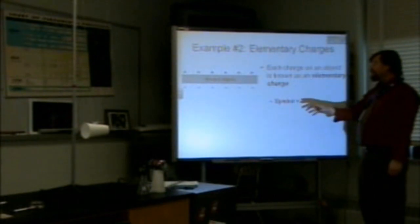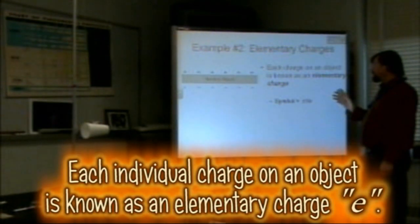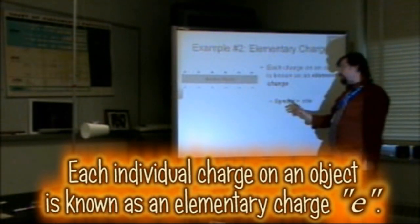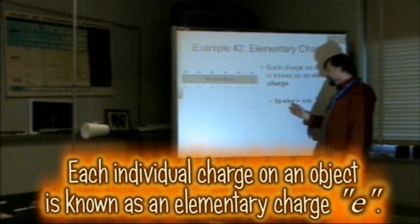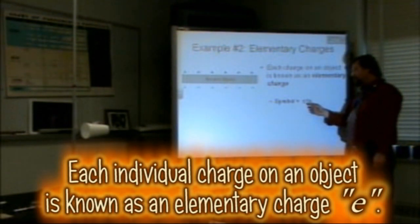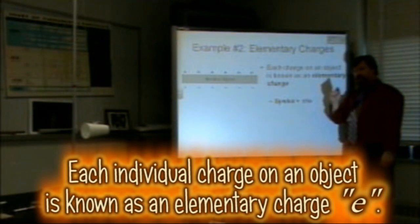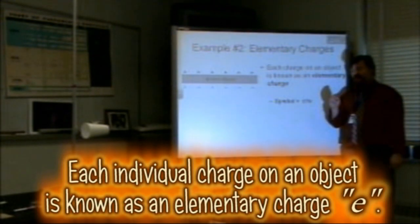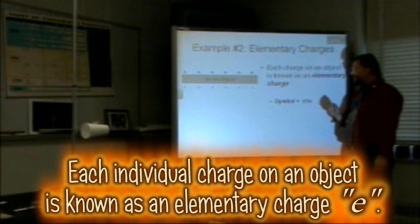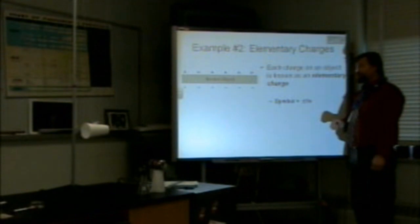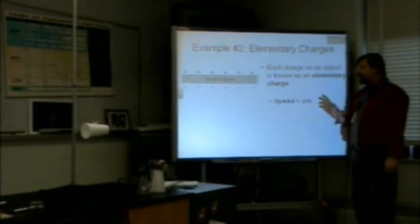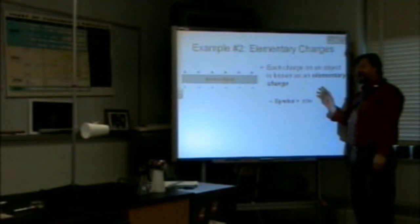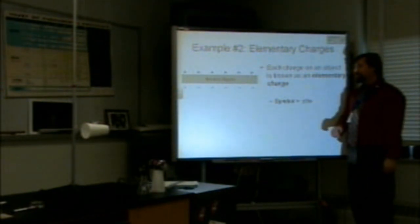Each charge on an object is known as an elementary charge, and the symbol is plus or minus one lowercase e. The lowercase e means one elementary charge — positive if you have more positive charges, or negative if you have more negative charges.